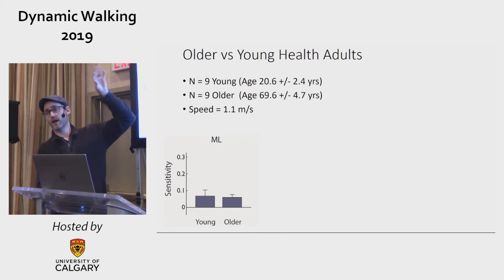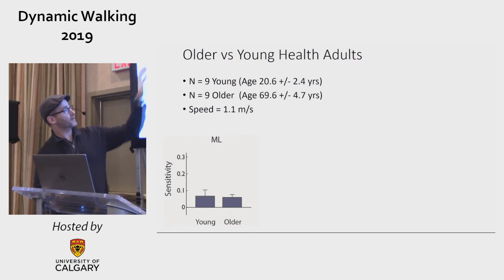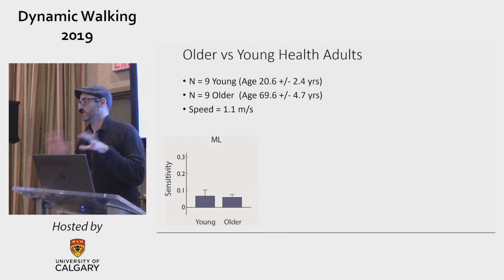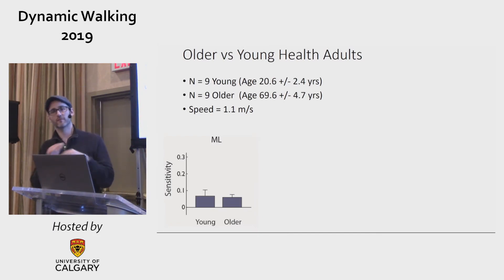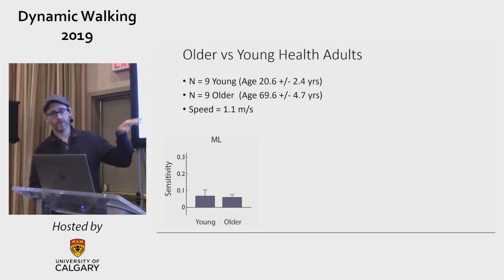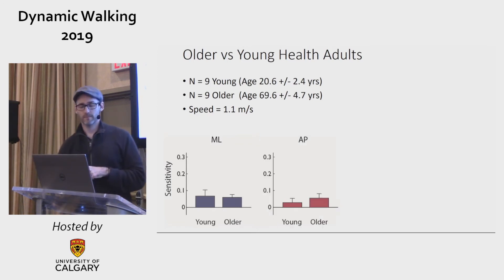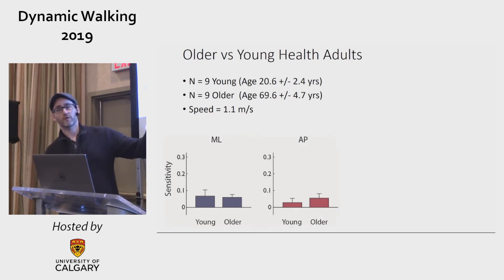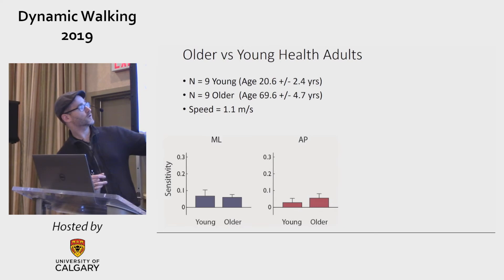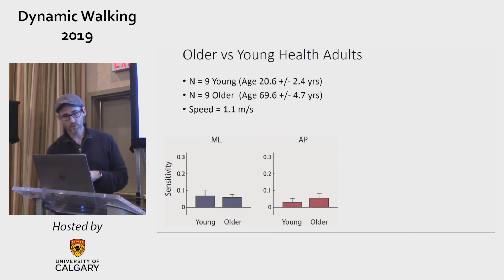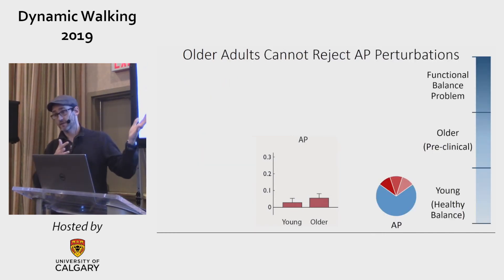How does this change with older adults? We tested nine younger and nine older adults. For medial-lateral sensitivity, we found no change — these were healthy older adults screened for medical conditions, walking regularly, with no history of falls. But when we look at AP sensitivity, older adults were significantly more sensitive to AP perturbations than young adults. In fact, looking at older adults alone, they were equally sensitive in both the medial-lateral and AP directions.